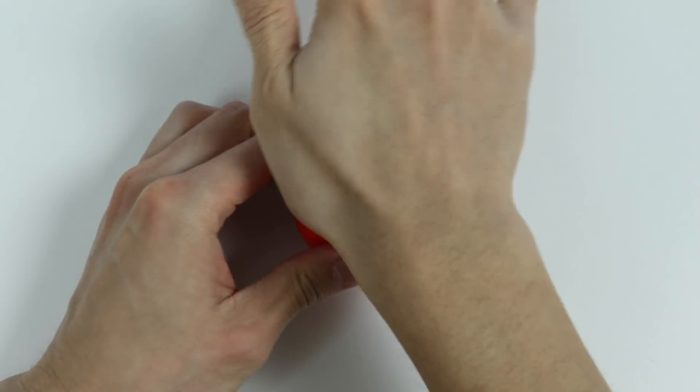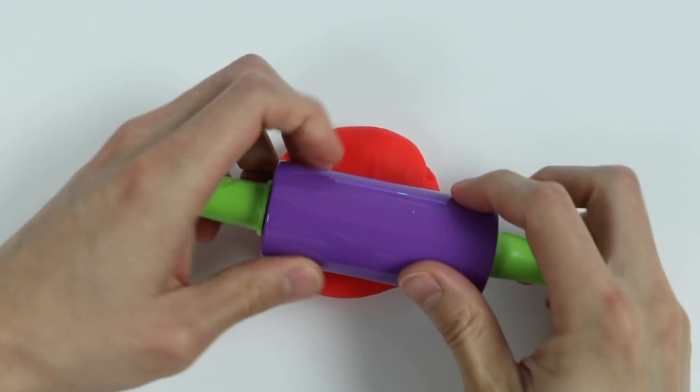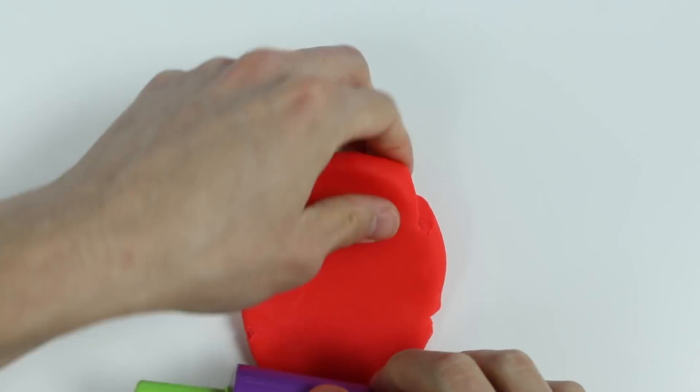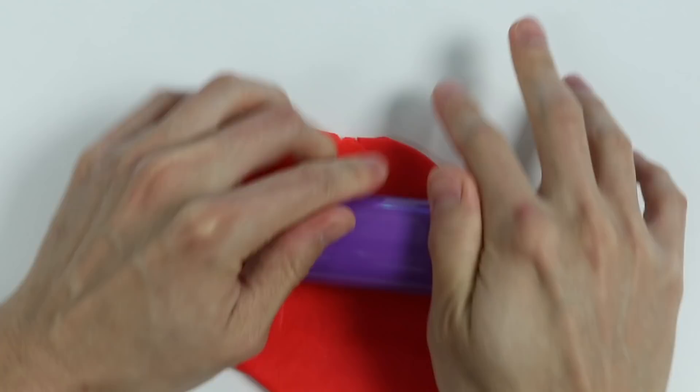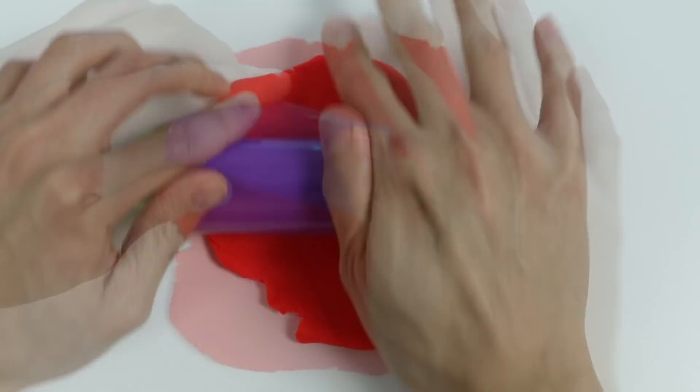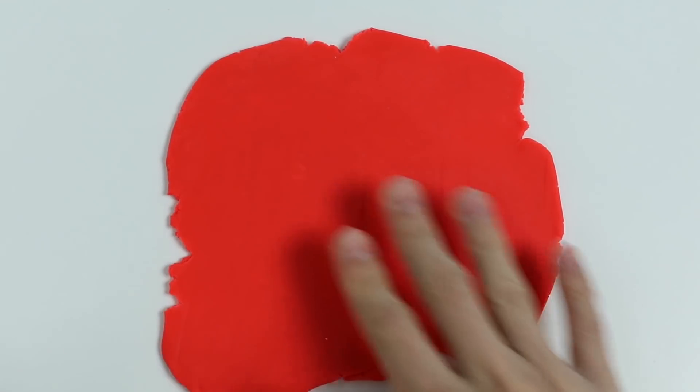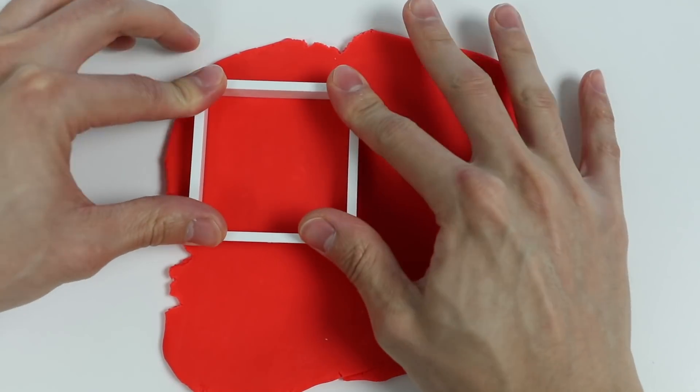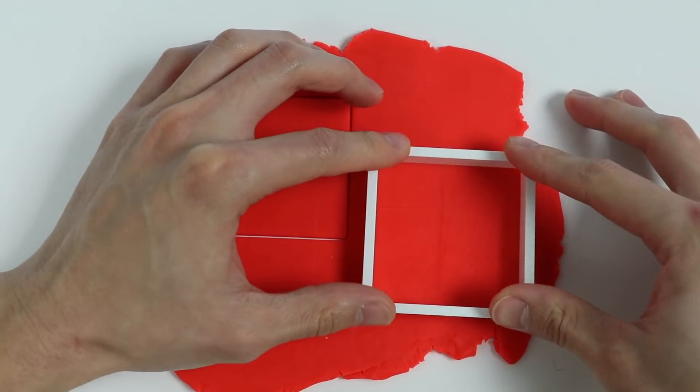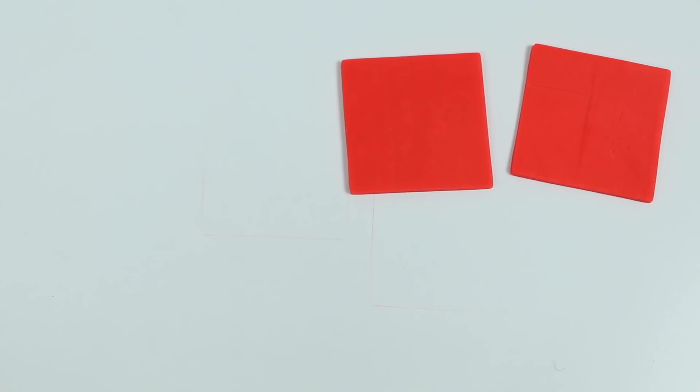Alright, let's start by rolling out some red Play-Doh. Now let's use this square cutter. Perfect! Let's make a couple more.